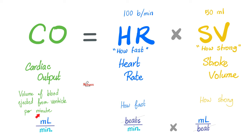How much does my left ventricle pump per minute? 5 liters per minute. How about my right ventricle? Also 5 liters per minute. The average volume of adult blood is about 5 liters. So your blood circulates throughout the entire body once every minute. And your heart has been doing this every minute, every hour, every day, every week, every month, every year that you've been alive.